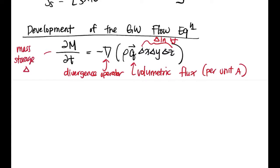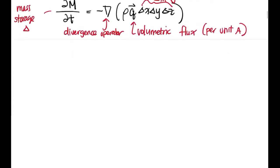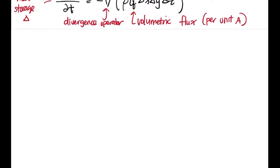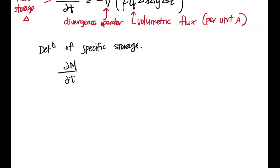According to this equation, your mass storage change is a function of essentially how much water is entering and exiting some finite volume. Everything on the right-hand side is essentially the convergence of your mass flux — how your mass flux is moving around and changing with respect to time. We can pull in our definition of specific storage to expand on this equation: dm/dt = density · S_s · dh/dt · Δx · Δy · Δz.